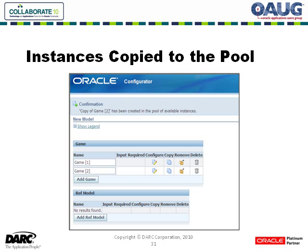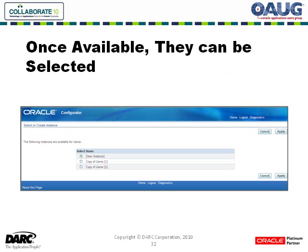Every time you save the model, create a new instance, or copy an instance, it gets dropped into what they call a pool. You can go back in and see which ones you want to select. For instance, you could have a maximum of five instances of a model, and you can configure 10, 15, or 20 copies — but it's only going to let you save five of them, because that's how it's controlled.